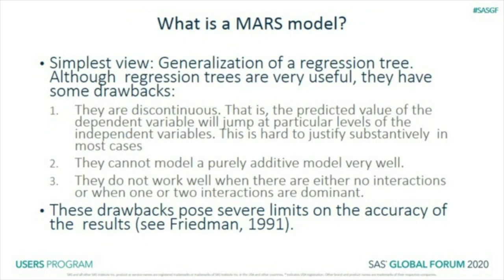You can view a MARS model as a generalization of a regression tree. Regression trees have problems — they're discontinuous (predicted values jump at particular levels of independent variables, which rarely makes sense), they don't fit purely additive models well, and they don't work well where there are no interactions or where one or two predictors are very dominant. You can see details in a paper by Friedman in 1991.